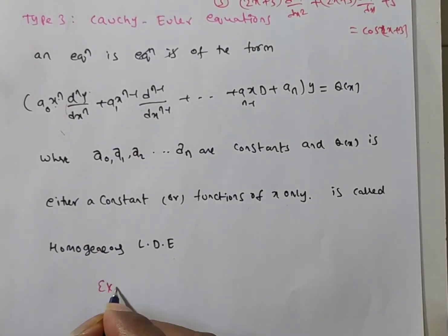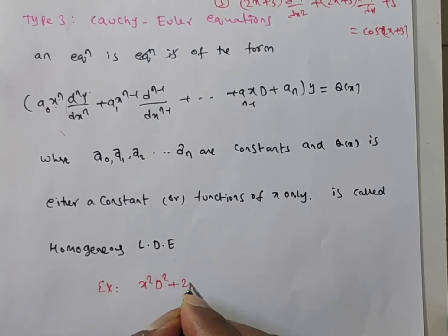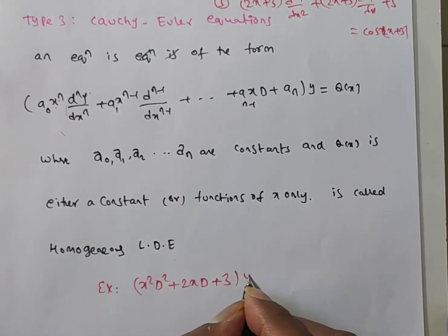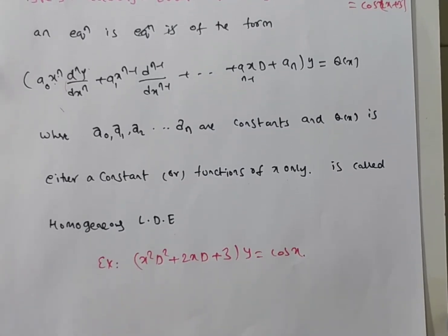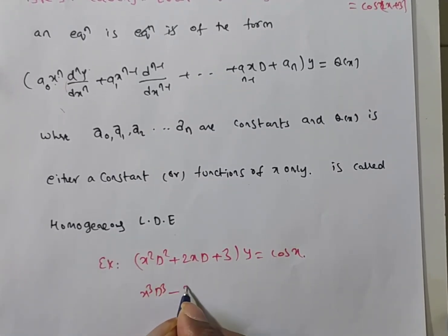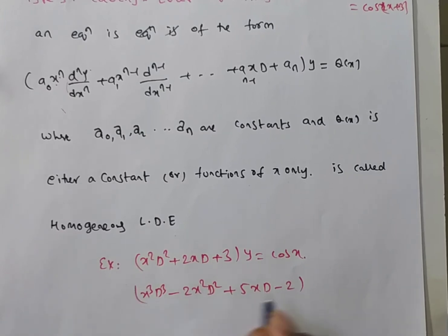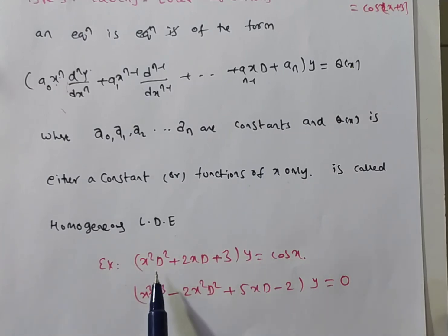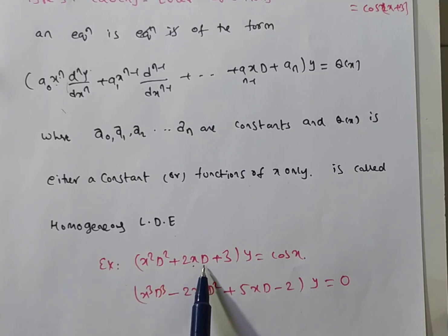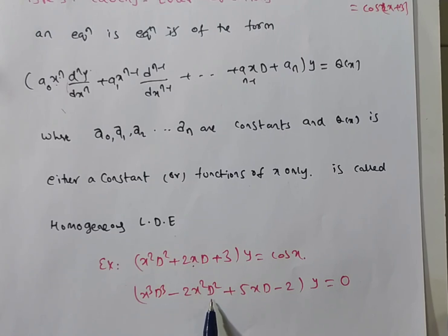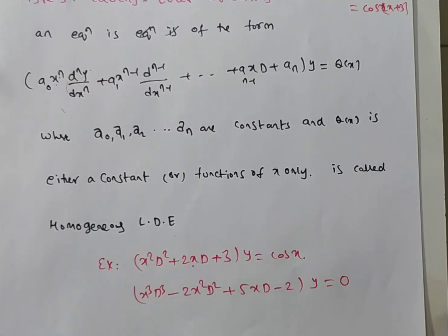For example: x²D² + 2xD + 3)y = cos x, and x³D³ - 2x²D² + 5xD - 2)y = 0 are Cauchy-Euler equations. In the first, the coefficient of D² is x² (index 2, order 2); of D is 2x (index 1, order 1). Similarly for the second example — index and order match in every term.